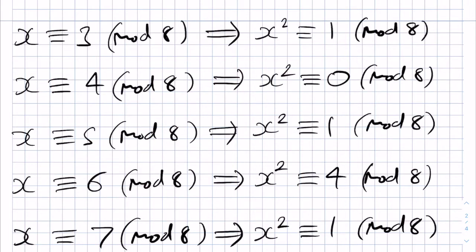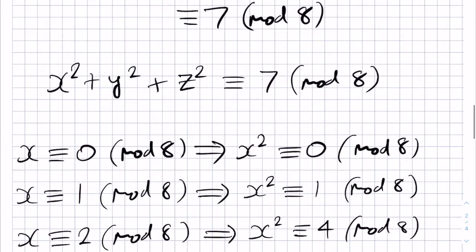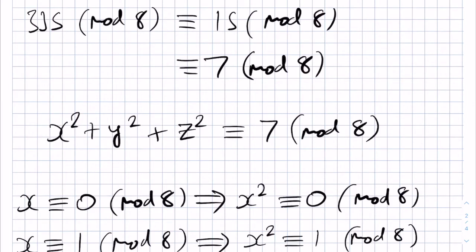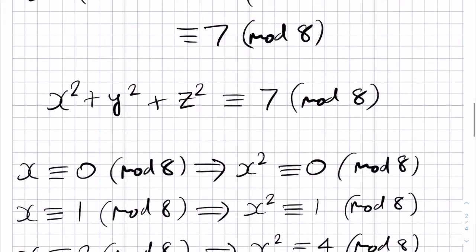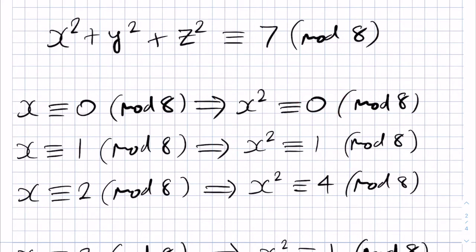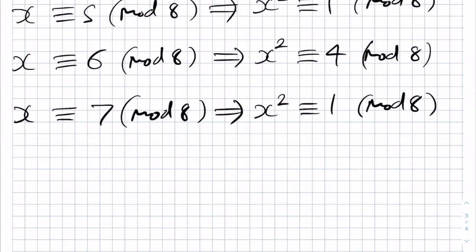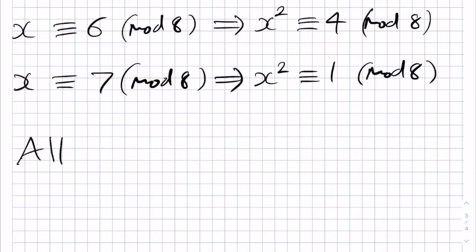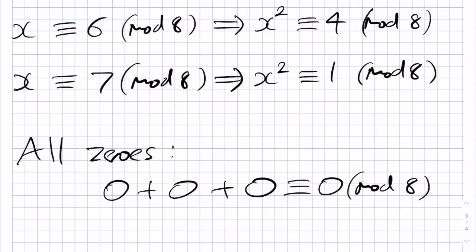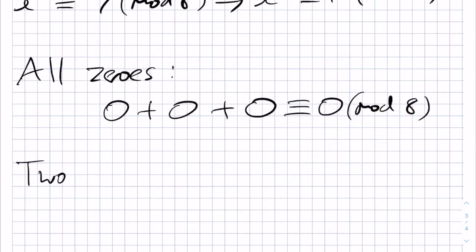Now, all we need to do to check that there are no solutions to our modulo equation is to check all of the cases for adding up the 3 squares, x squared, y squared, and z squared, where each of these values will only take the value 0, 1, or 4 as we showed previously. And we need to check that we can't possibly get the value of 7 in any of these cases. If we approach this systematically, starting with all 0s, then we have 0 plus 0 plus 0 for our 3 squares. This is congruent to 0 mod 8. So that's not 7, so we're all good. Then we have two 0s is the next case.